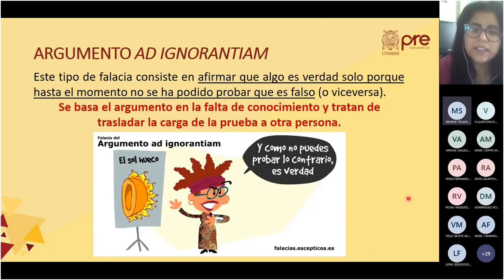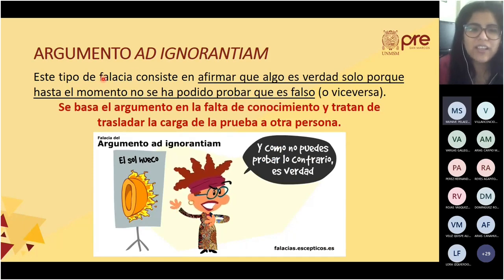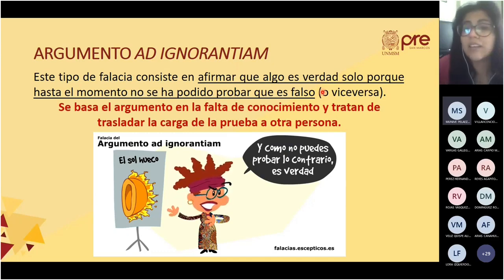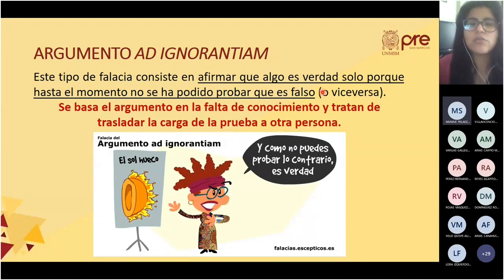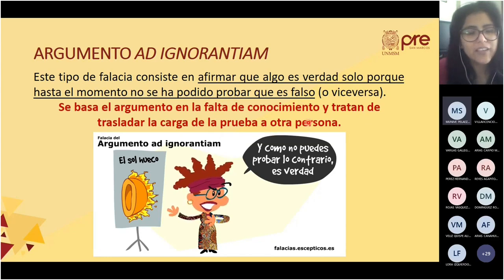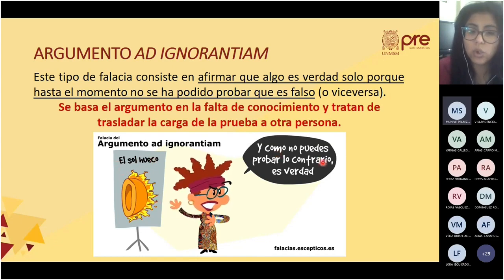La tercera falacia se llama argumento ad ignorantiam. Consiste en afirmar algo como verdad solo porque hasta el momento no se ha podido demostrar que es falso, o al contrario: afirmar que algo es falso porque no se ha podido demostrar lo contrario. Se basa en la falta de conocimiento y trata de trasladar la carga de la prueba. Ejemplo: 'El sol es hueco, y como no puedes probar que no lo es, entonces lo que yo digo es verdadero.'